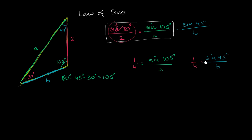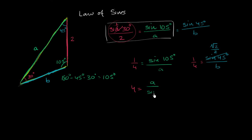We can also say one fourth is equal to sine of 45 degrees over B. Sine of 45 degrees is square root of two over two from the unit circle. In either case, let's solve for A and then solve for B. Taking the reciprocal of both sides, four equals A over the sine of 105 degrees. Multiplying both sides by sine of 105 degrees, we get four times the sine of 105 degrees is equal to A.